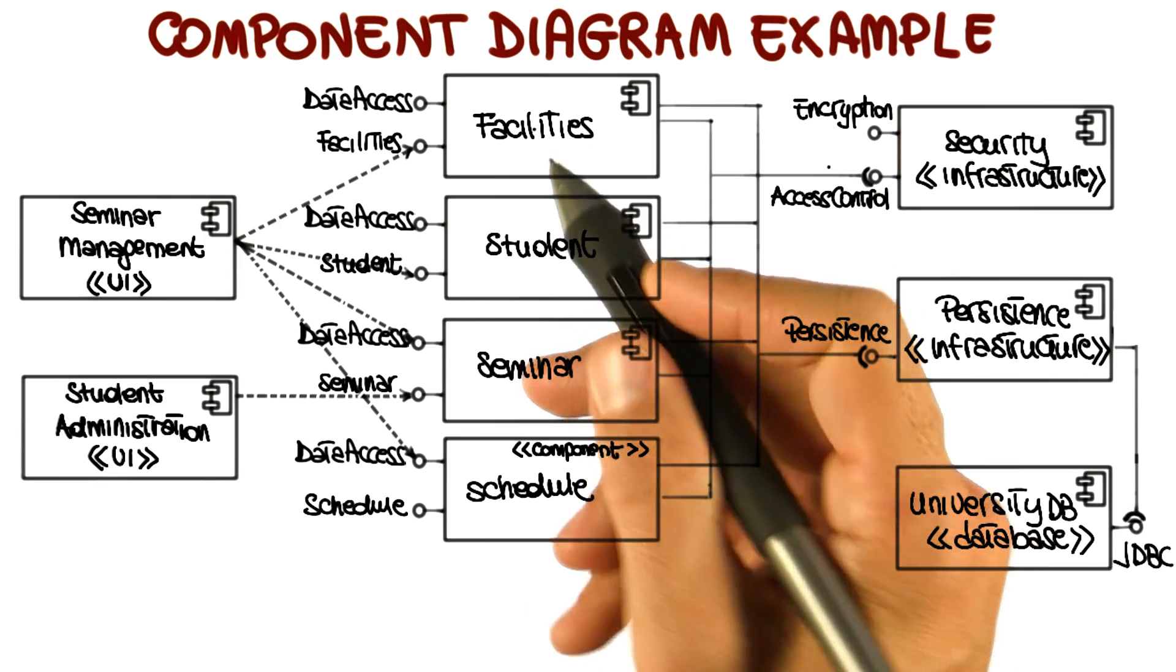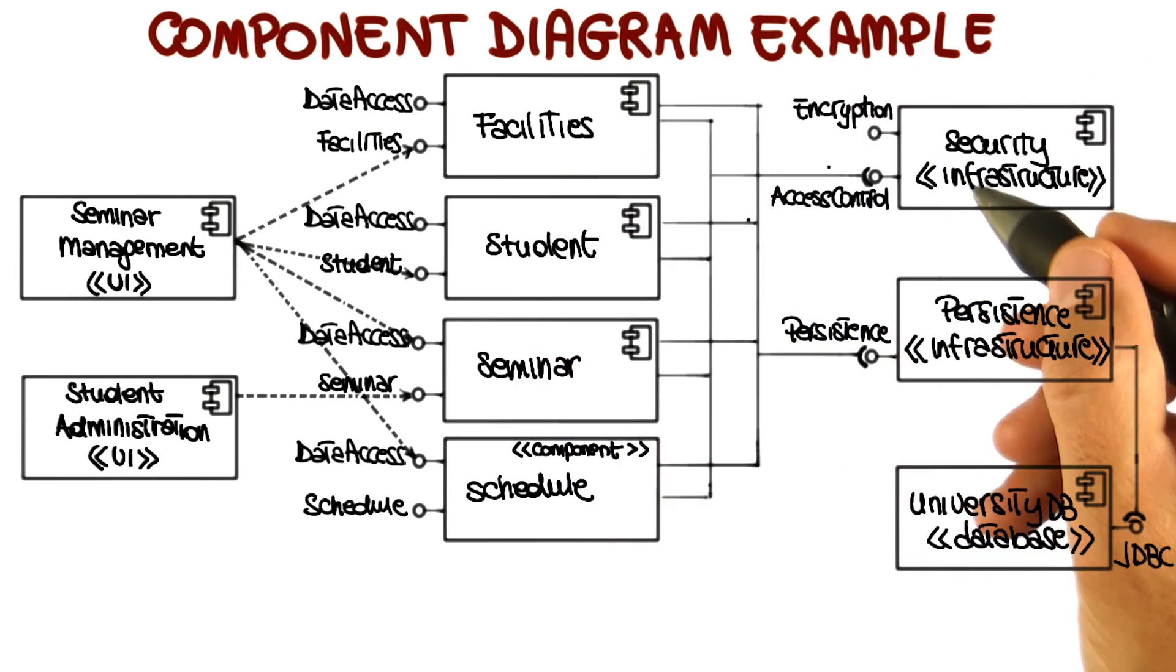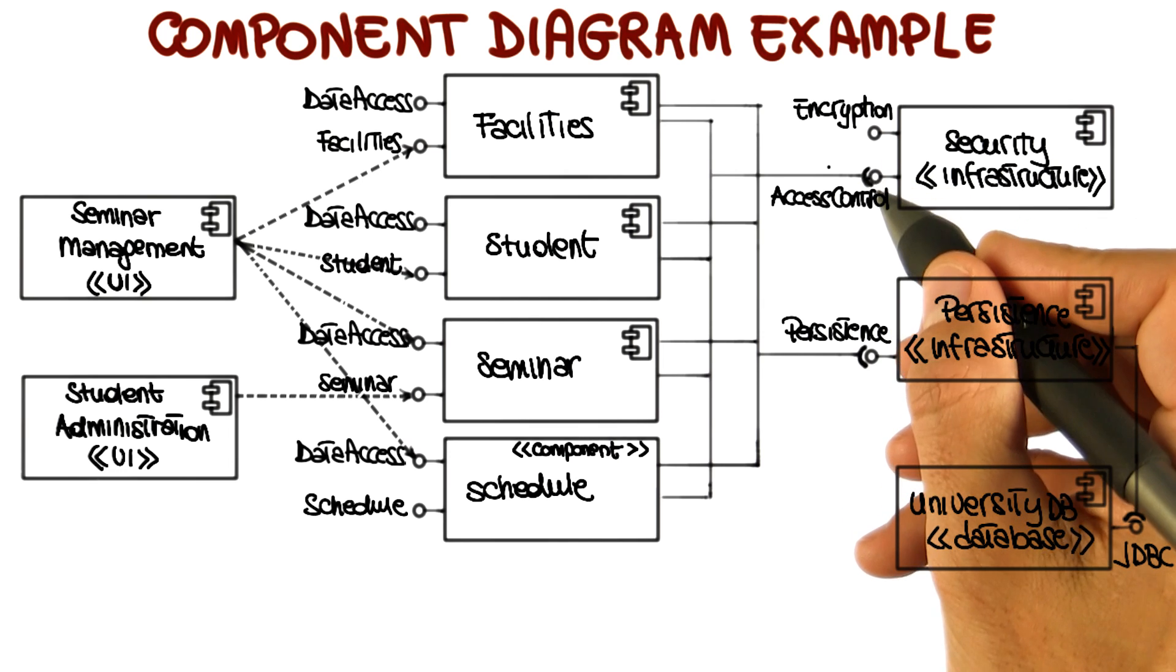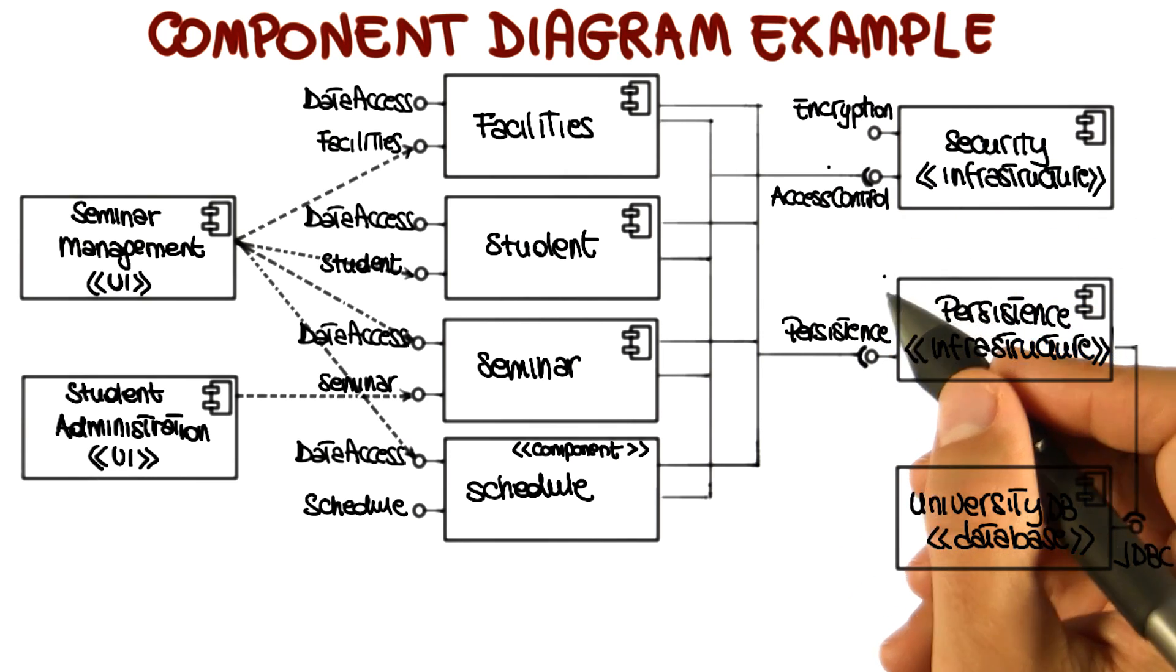More recently, in UML2, a richer representation was introduced, which is the one that I'm also showing here. So if we look at this part of the diagram, you can see this sort of lollipop socket representation.